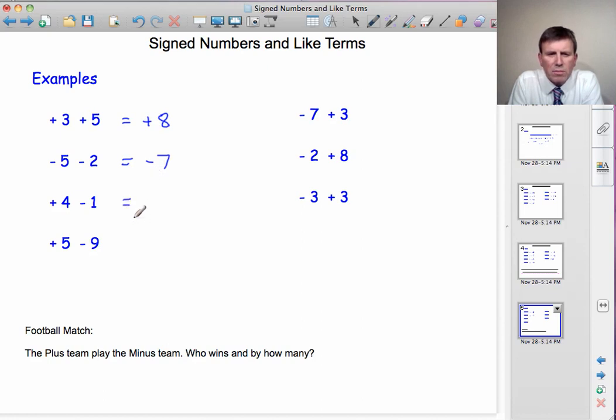What about this game? Who's won? The pluses or the minuses. Well, the pluses score 4, the minuses score 1. So the pluses have won by 3. And the answer's plus 3.